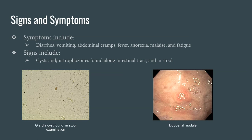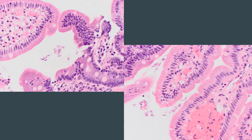The cysts and trophozoites of the parasite can also be found in the stool and in the biopsy of an infected person. The vast majority of Giardiasis cases present with normal histology, apart from the presence of cysts and trophozoites along the intestinal tract.